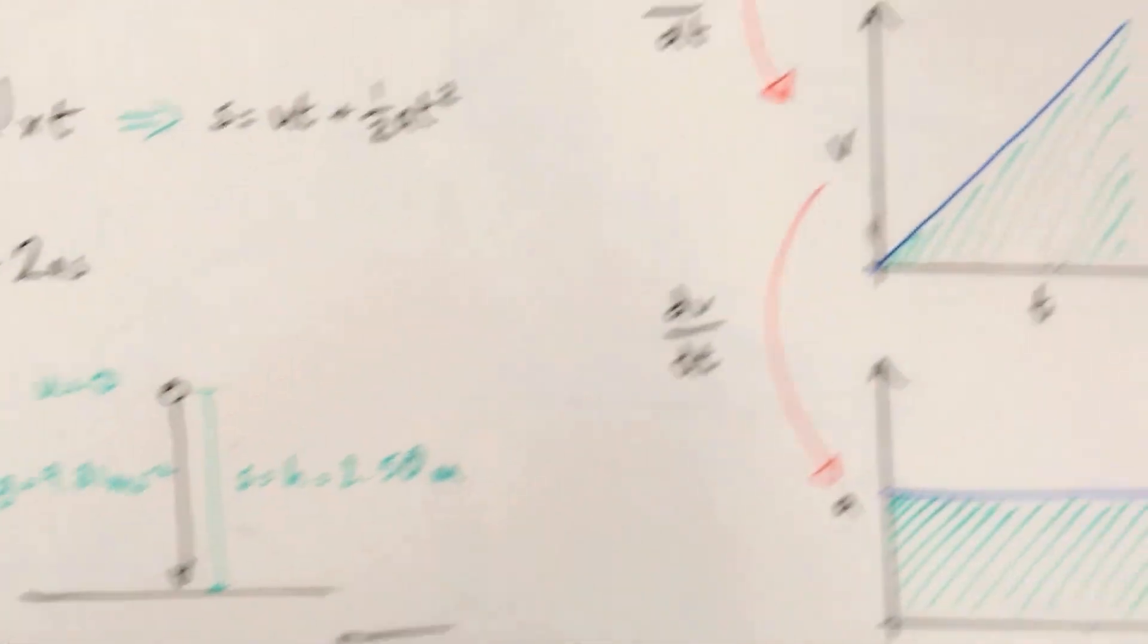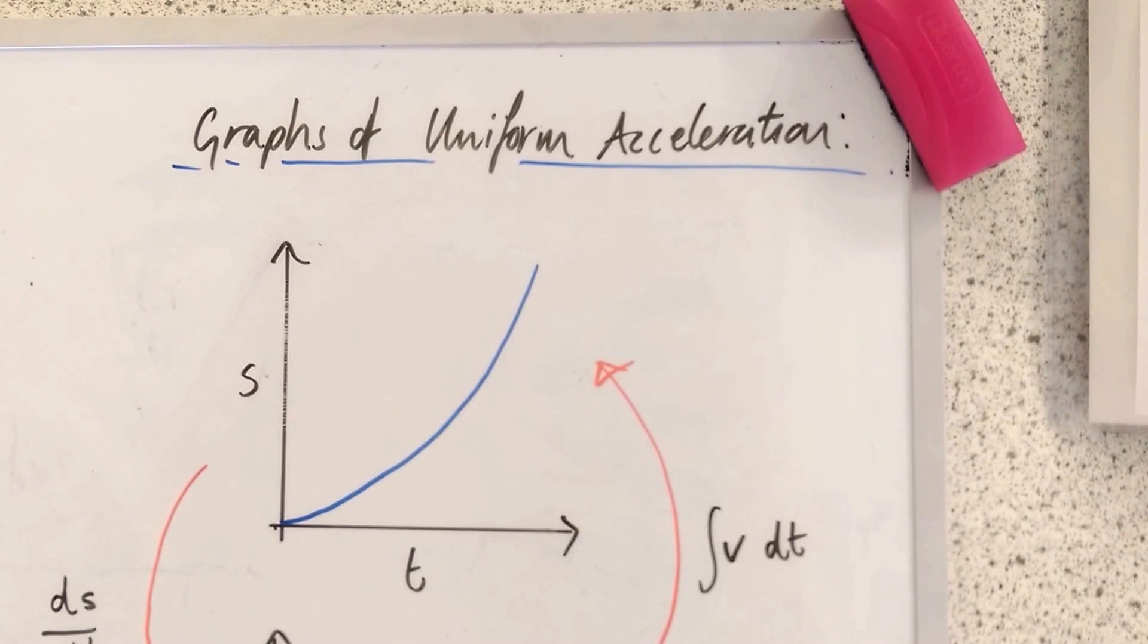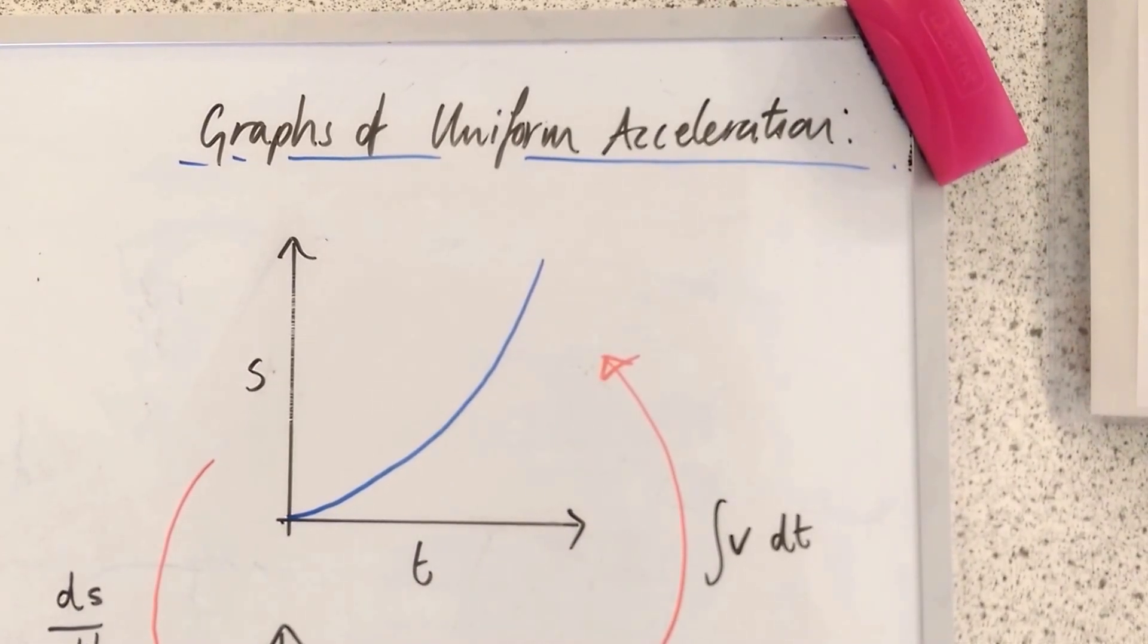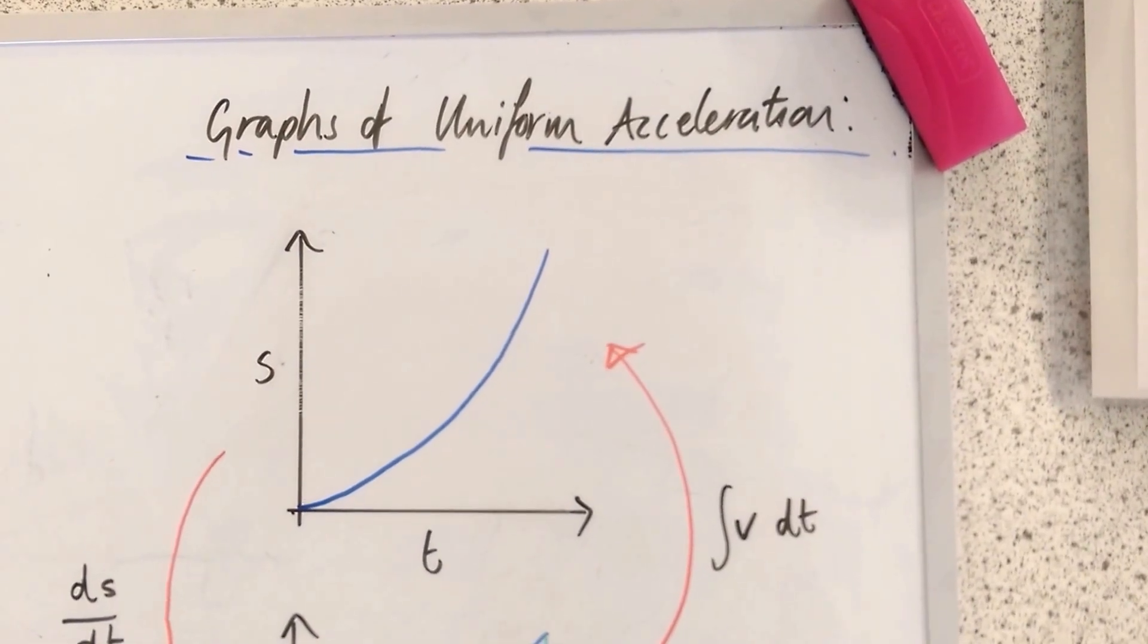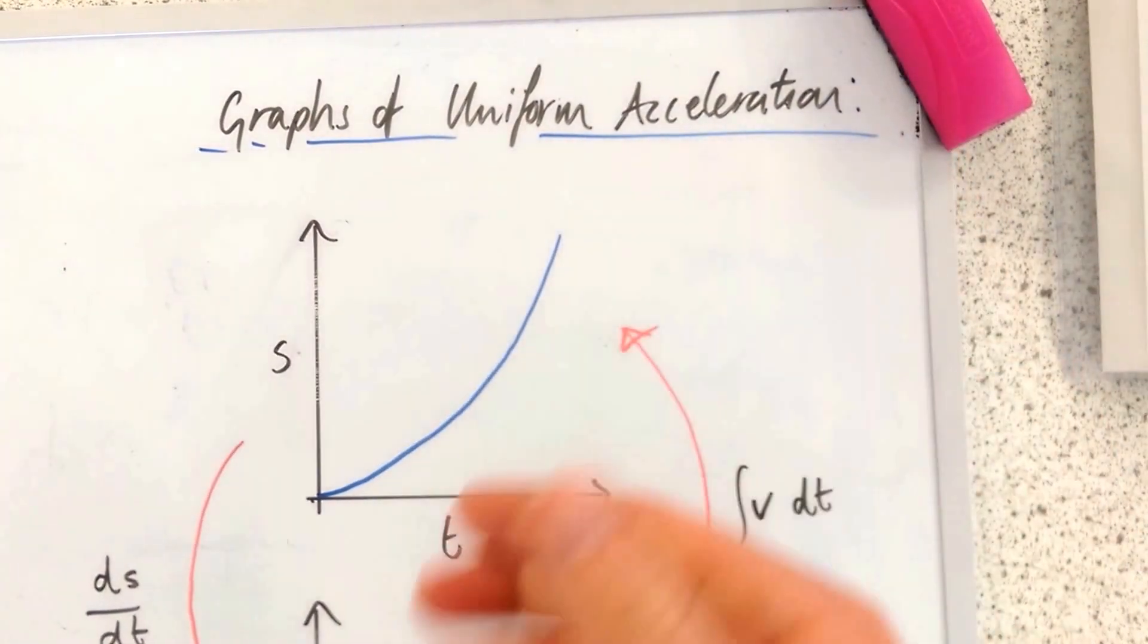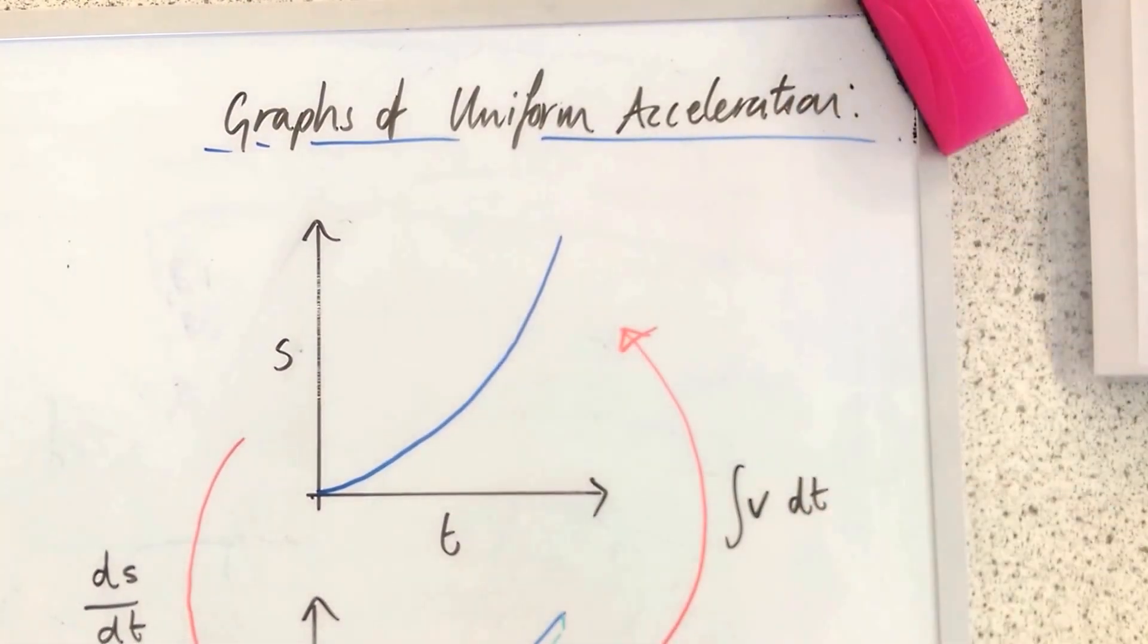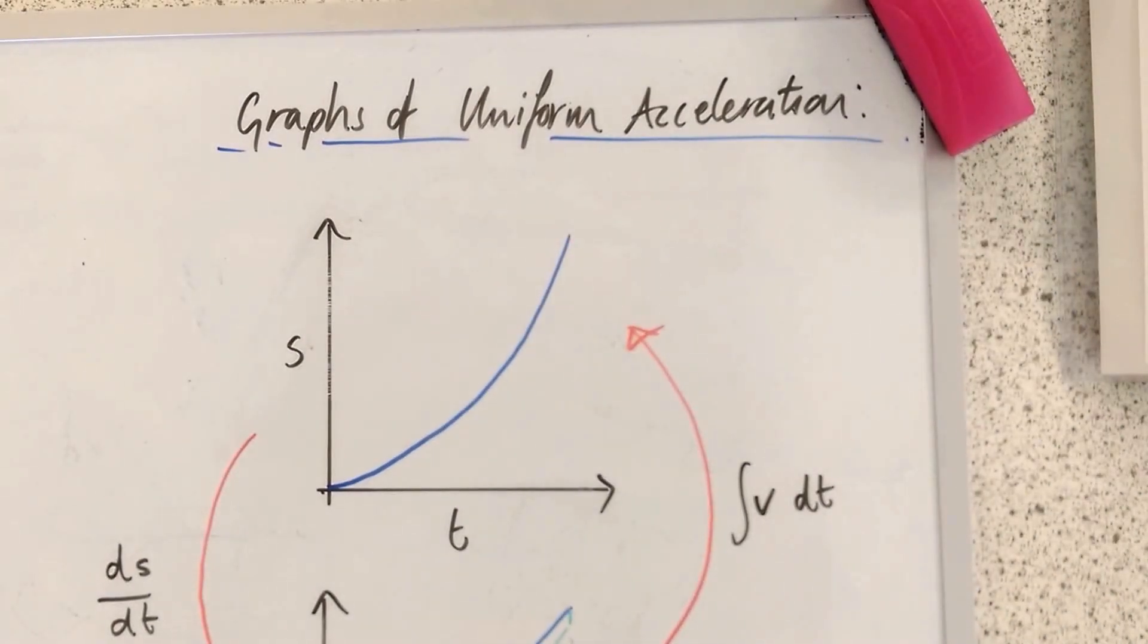So a little bit of graph work now. These graphs are all graphs of uniform acceleration. In other words, it's a body being accelerated at the same rate. So the first one is a displacement time graph. You can see that the gradient of the displacement time graph is the velocity. It is gradually increasing in velocity. So it's getting further and further away at an increasing rate.